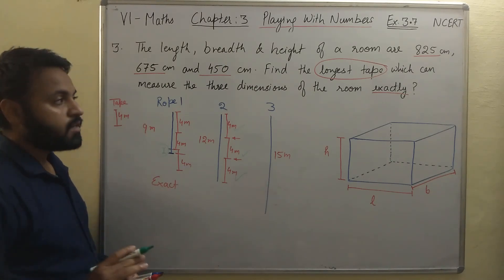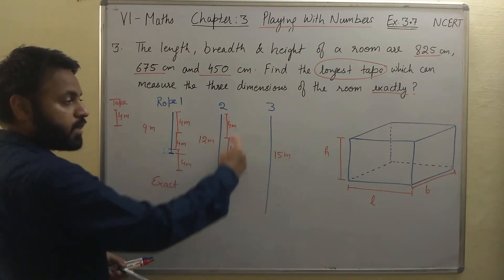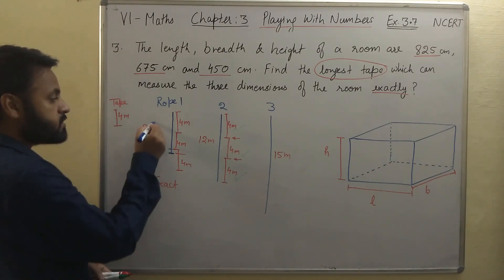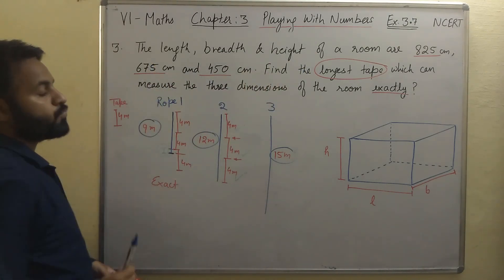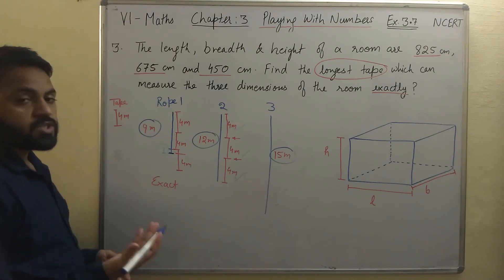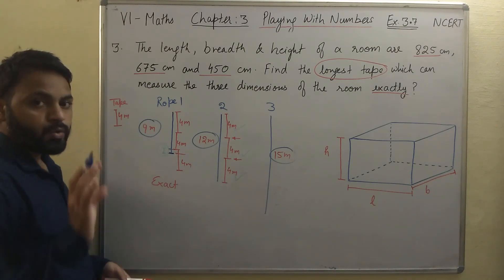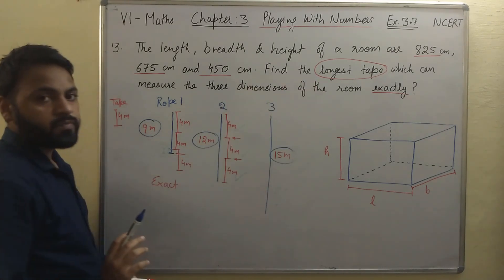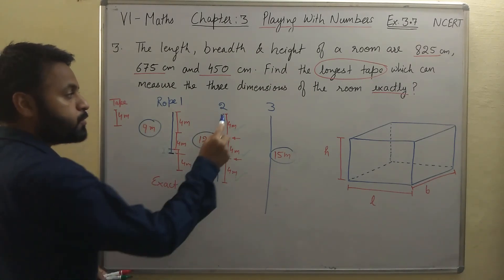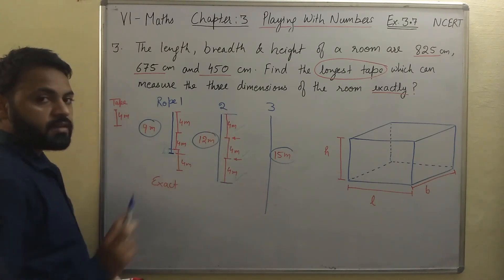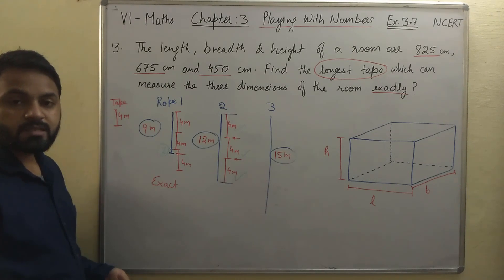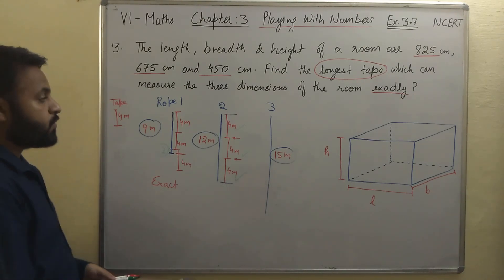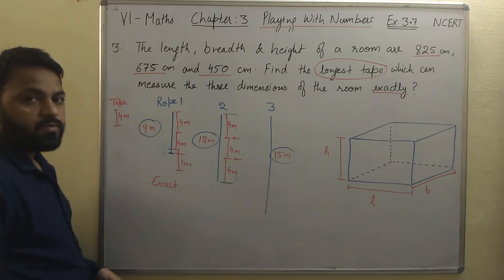So this is what we have to understand. The meaning of 'exactly' is: with the same length of tape, we have to measure all 3 dimensions fully. In this question, the dimensions are 825 cm, 675 cm, and 450 cm. We have to find which tape can measure these lengths exactly, and the tape should be the longest. Whenever longest, highest, or greatest value is asked, we always go for the HCF. If we find the HCF of 9, 12, and 15, we will get the right answer.